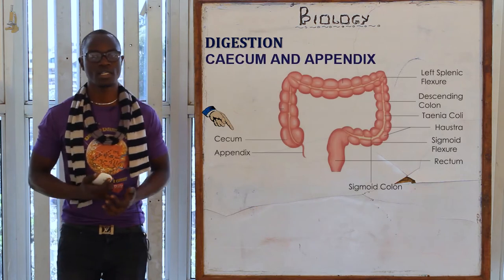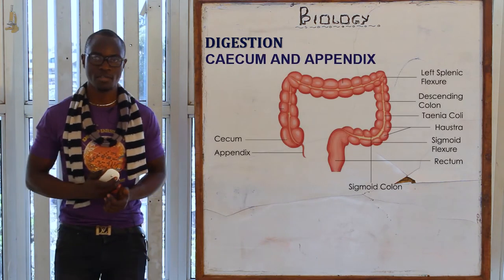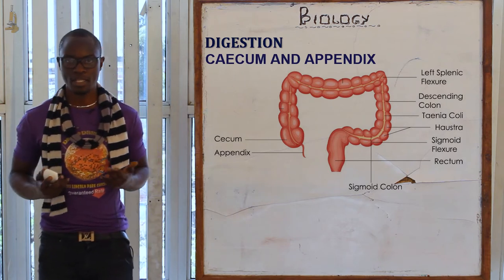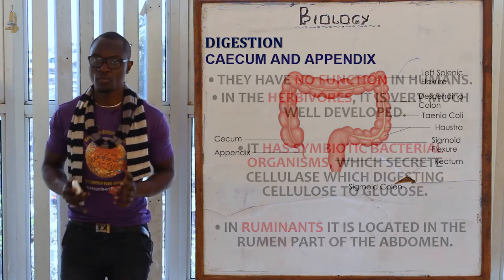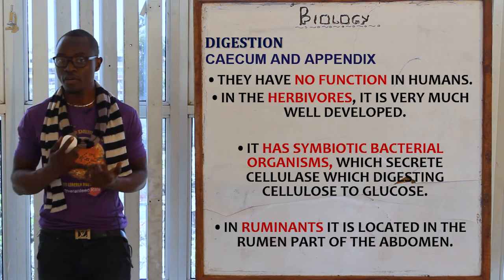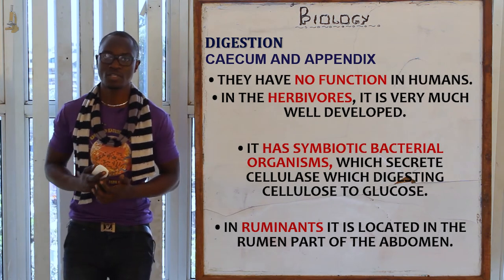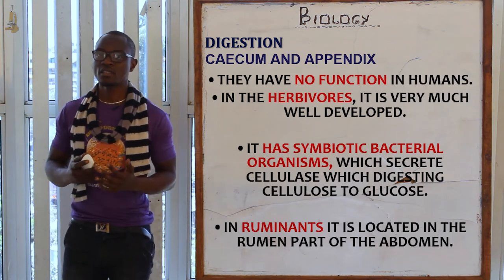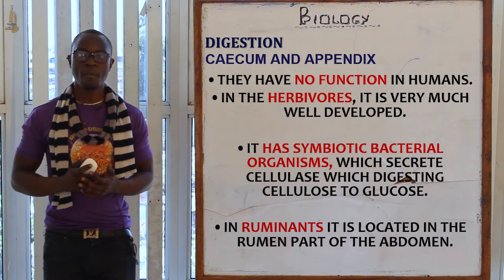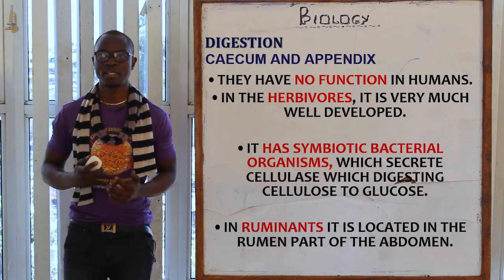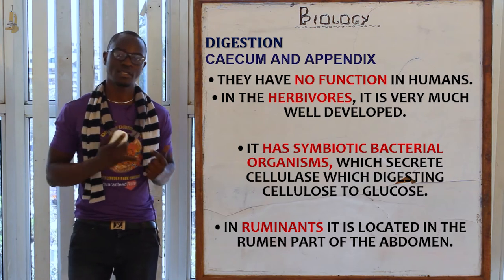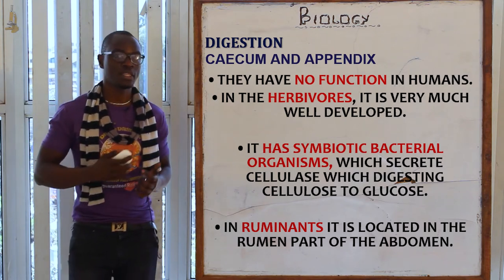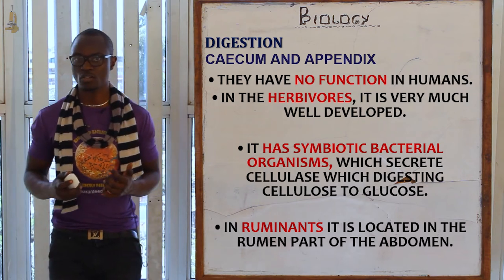The caecum and appendix in human beings don't have any function. However, in herbivores such as rodents, they are very well developed, containing symbiotic bacteria that secrete cellulase which digests cellulose to glucose. In ruminants, this function is found in the rumen part of the stomach.